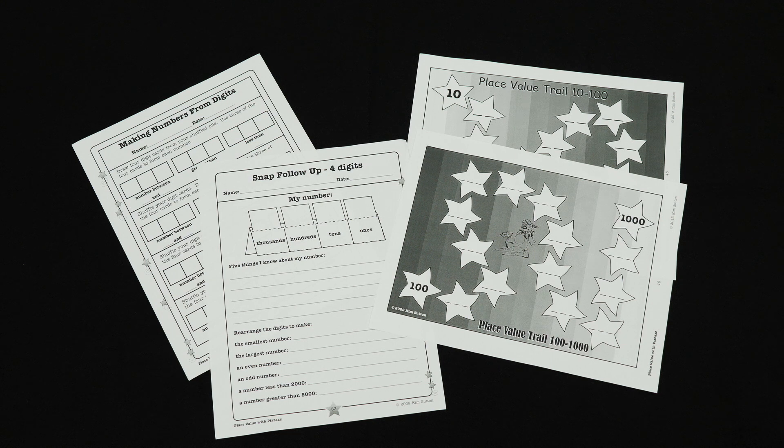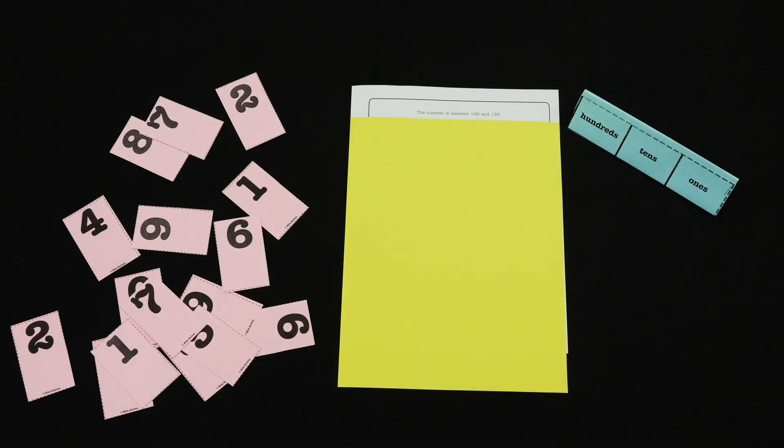Your students will get plenty of practice using the games and activities in this book. One of the most important parts of this book are the place value clues, where students follow clues with their place value pockets and digit cards. The book includes 150 sets of clues, more than you can ever use in a year. Here's a set for primary learners.